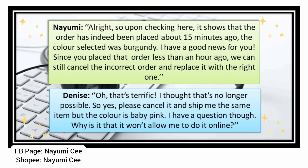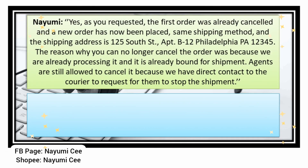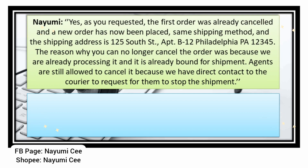As requested, the first order has been cancelled and a new order has been placed with the same shipping method. Shipping address: 125 South Street, Apartment B12, Philadelphia, PA 12345. The reason you couldn't cancel online is because the order was already being processed and bound for shipment. Agents can cancel it because we have direct contact with the courier.